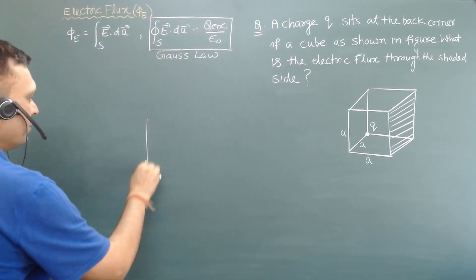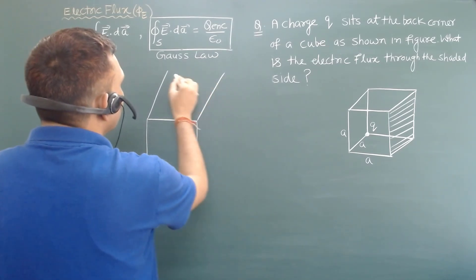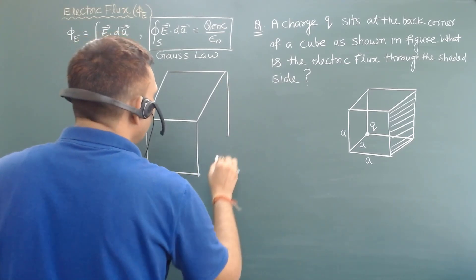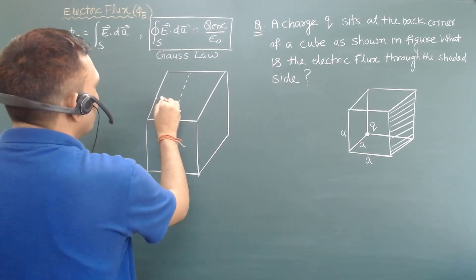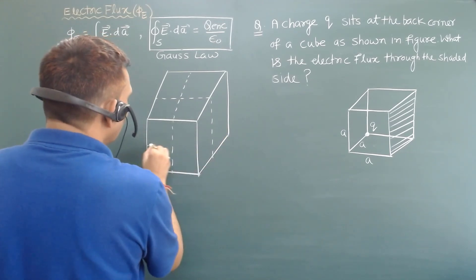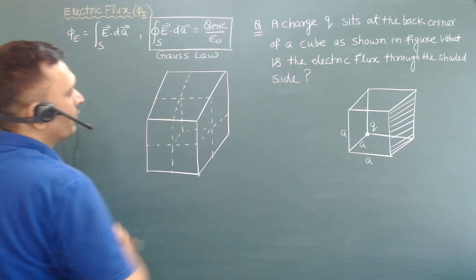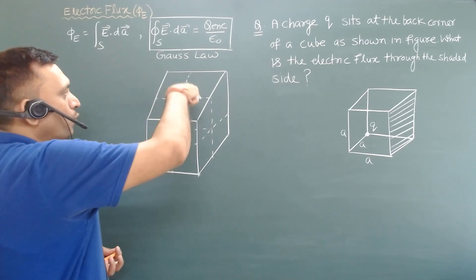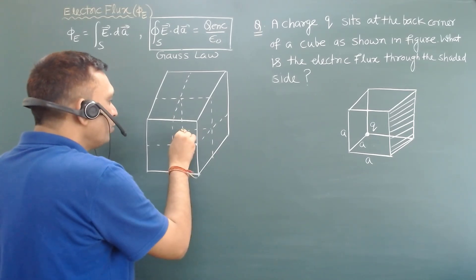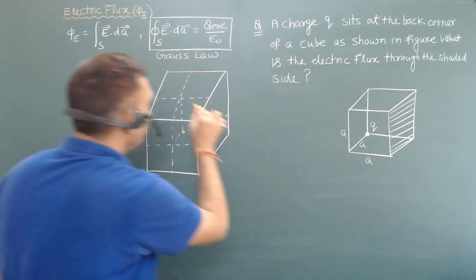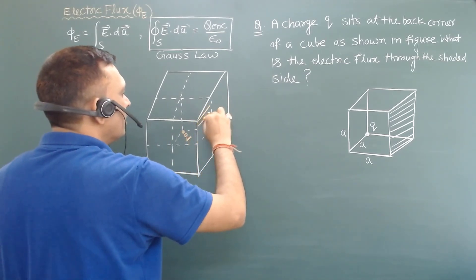Let us draw this bigger cube. We have taken four cubes on the upper side and four similar cubes on the lower side. This charge q is at the corner of the original small cube shown here, and it is now at the center of the bigger cube. We have to find the contribution of flux through the shaded surface of the original cube.